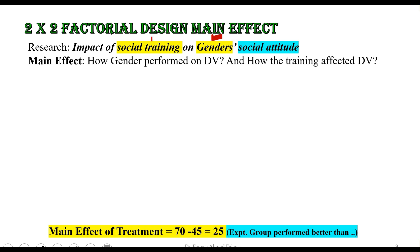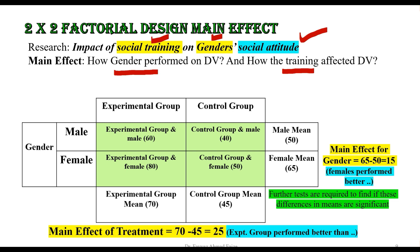With two independent variables — gender and type of training — there are two main effects: one due to gender and one due to training. The dependent variable is the change in social attitude. In the diagram, the experimental group male score is 60, control group male score is 40, experimental group female score is 80, and control group female score is 50.